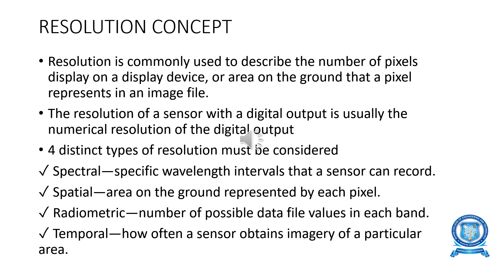Spectral resolution refers to the specific wavelength intervals that a sensor can record. Spatial resolution is the area on the ground represented by each pixel. Radiometric resolution is the number of possible data values in each band. Temporal resolution is how often a sensor obtains imaging or pictorial data.